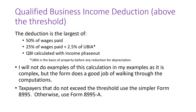When you are above the threshold, the deduction is the largest of: 50% of wages paid, 25% of wages paid plus 2.5% of UBIA, or the QBI calculated with the income phase-out.